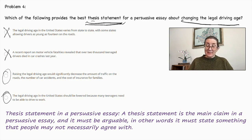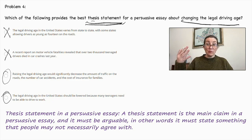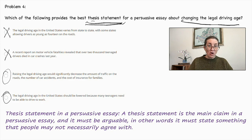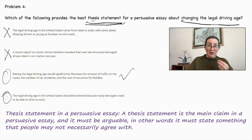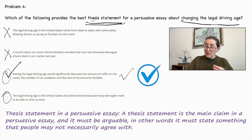Which one is the best? The best, most thorough with the most details and reasons is: raising the legal driving age would significantly decrease the amount of traffic on the roads, the number of car accidents, and the cost of insurance for families. A thesis statement in a persuasive essay should not only be debatable, as this one is, but also give supporting reasons — so this is the correct answer.